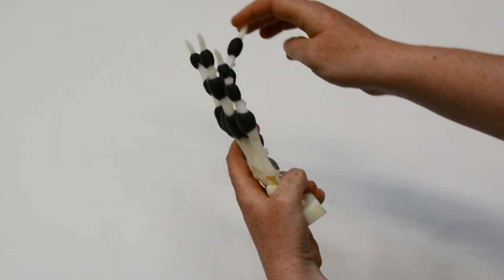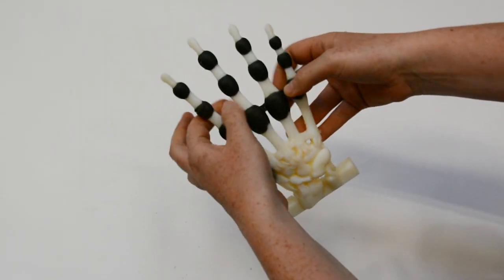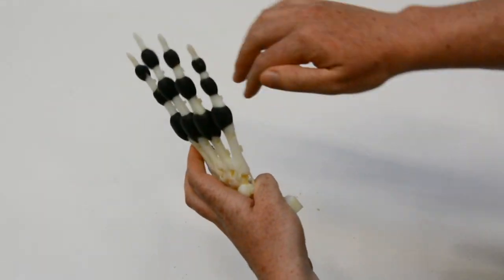They built several hands, with different levels of stiffness in each joint, to see what kind of behaviors they could achieve.